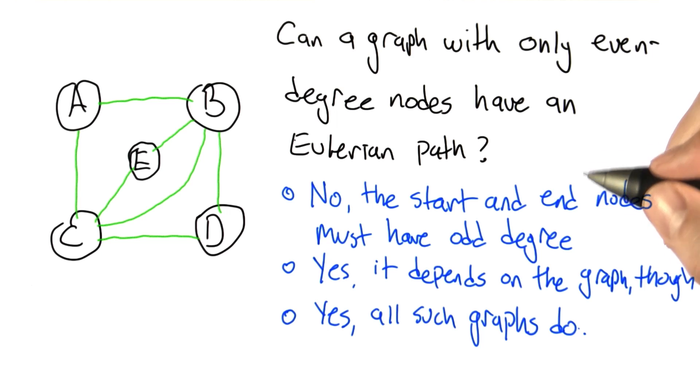Another possibility is that the answer is yes, all such graphs do. Any graph that's connected and has only even degree nodes will have an Eulerian path of a particular form.